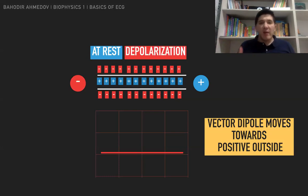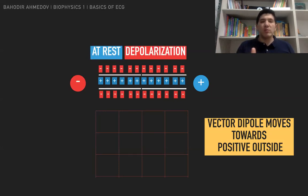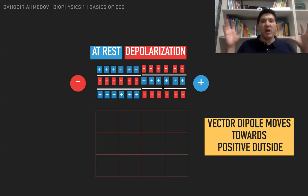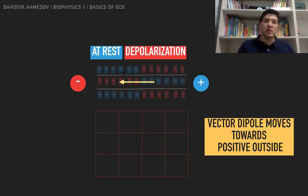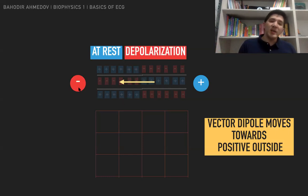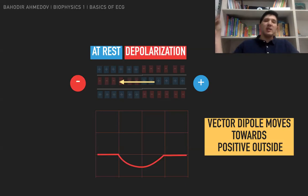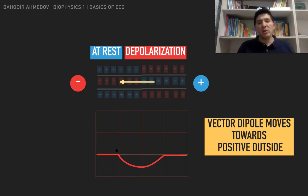After a while, the repolarization process begins when everything returns to the normal position — negative inside and positive outside. Let's pause again when repolarization reaches half the chain. Now the positive outside charge is on the other side, so our dipole is going to move in that direction. If you look at the dipole vector, it moves toward the negative electrode. On paper, we're going to have a deflection again, but this time a negative deflection. This is how we trace depolarization using two electrodes.